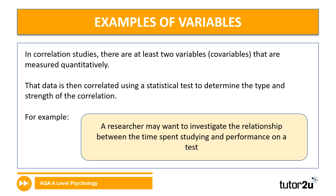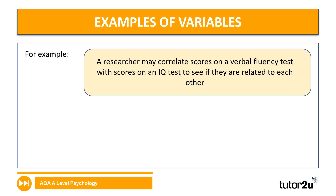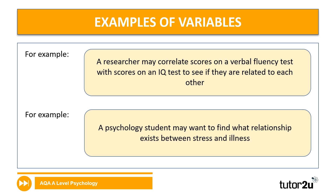Let's take a look at some other examples. A researcher may correlate scores on a verbal fluency test with scores on an IQ test to see if they are related — the two variables being score on the verbal fluency test and score on the IQ test. Just like experiments, you have to operationalize your variables. Another example: a psychology student may want to find what relationship exists between stress and illness — you'd have to find some way to effectively measure stress and illness, most likely some kind of self-report.